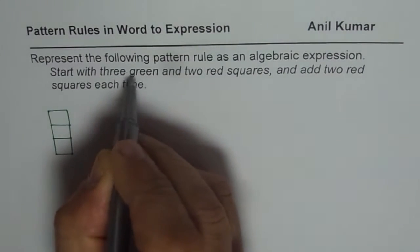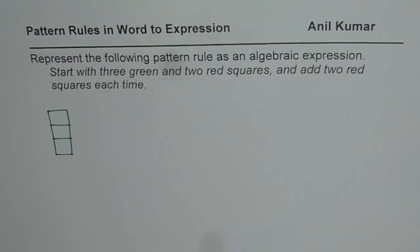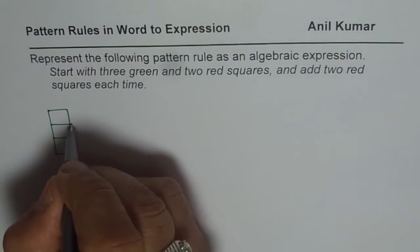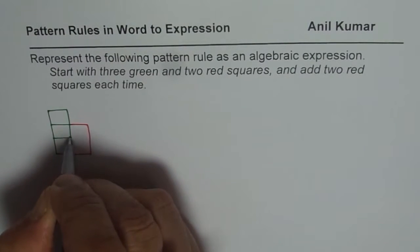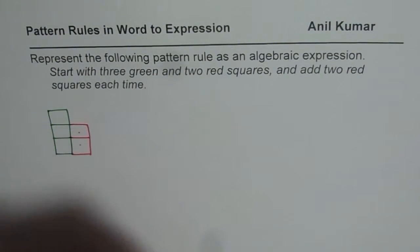So we start with 3 green squares and 2 red. Let me make 2 red squares. These are my 2 red squares - so 2 red squares and 3 green squares.